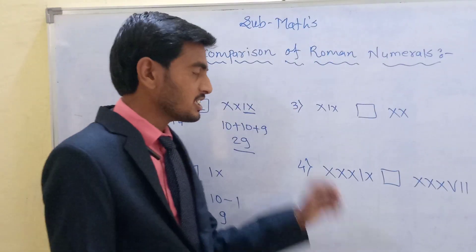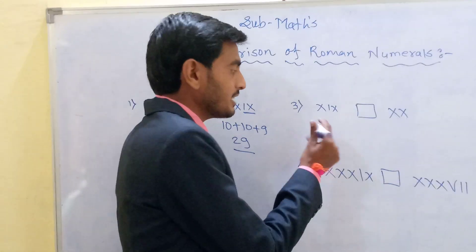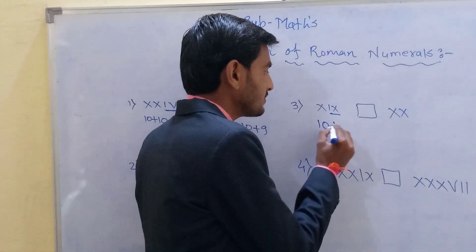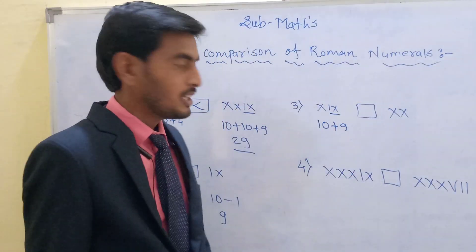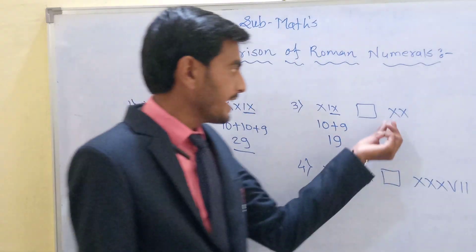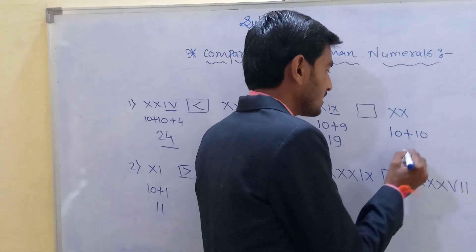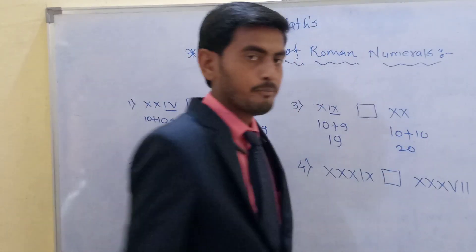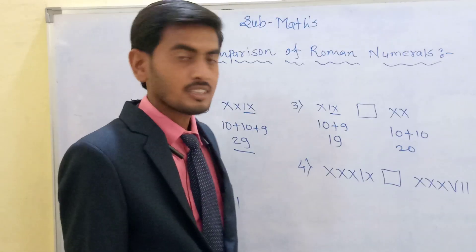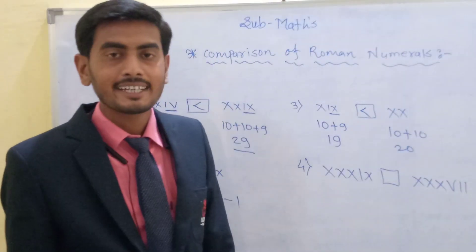Example number 3: XIX and XX. X represents 10, and IX represents 9, so 10 plus 9 is equal to 19. For XX, 10 plus 10 is equal to 20. Comparing both, 20 is greater than 19, so we place the greater-than symbol accordingly.